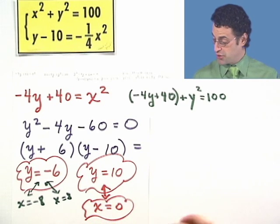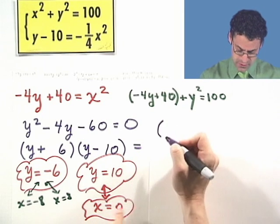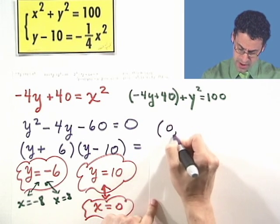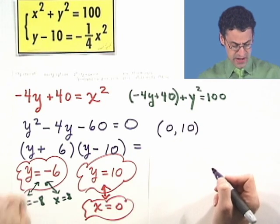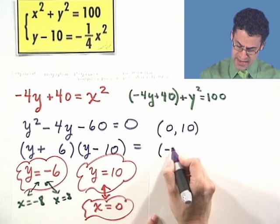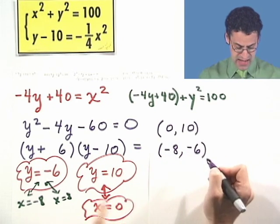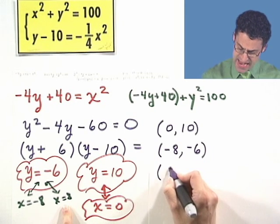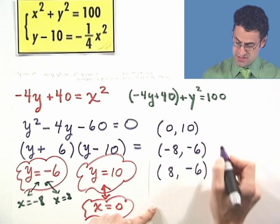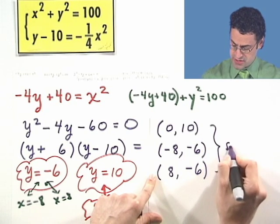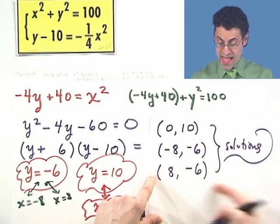To summarize, there are three solutions to this system. The first is (0, 10), meaning x equals 0 and y equals 10. The second is (negative 8, negative 6), and the third is (8, negative 6).